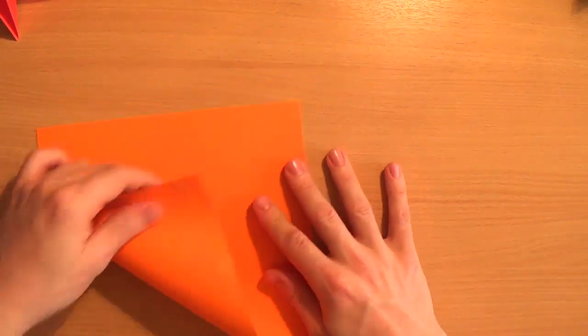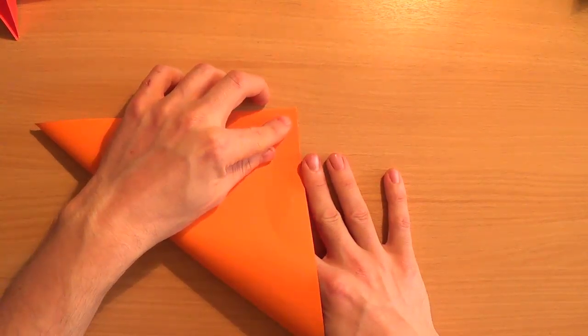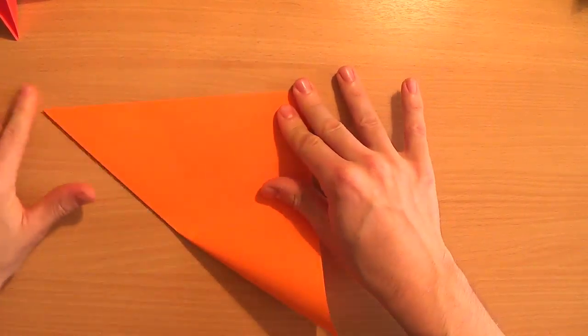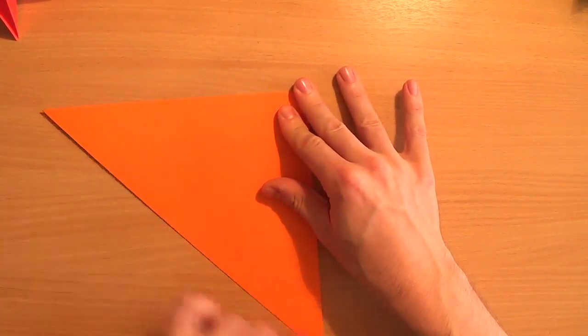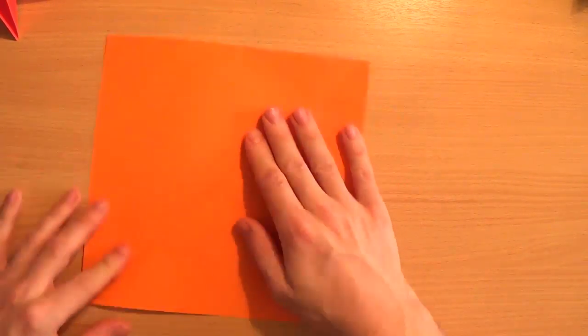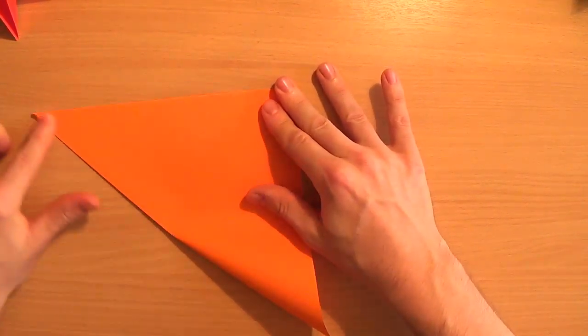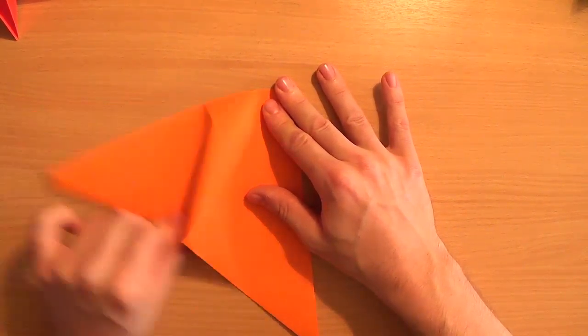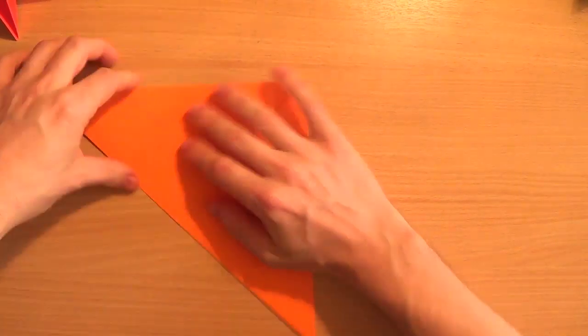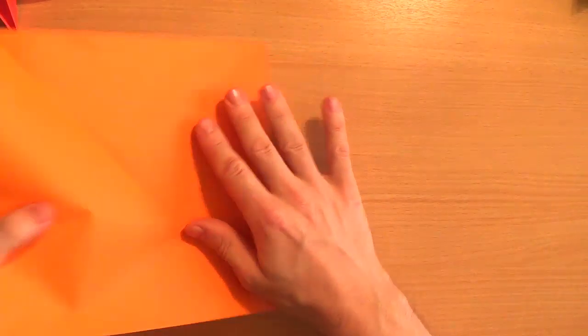First thing to say, we want to make a water bomb base. So we're going to do two diagonal folds. That's your second.